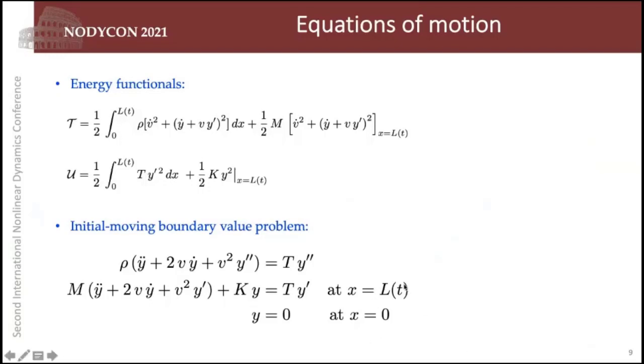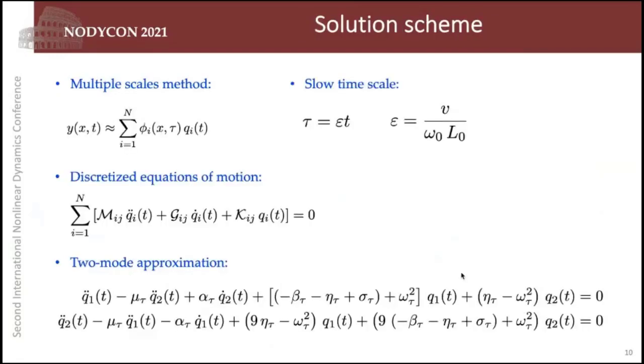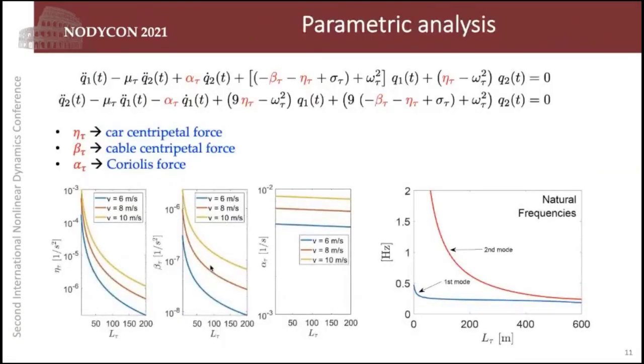I bring your attention that the length here is time dependent. So the boundary of this problem moves, changes with time. To solve this, we employ the multiple scale method, where we introduce a small, a slow time scale, defined in this way here with this small parameter. And with this approach, we're able to discretize the equation of motion arriving in an expression for the equation of motion with a mass operator, a gyroscopic operator, and a stiffness operator. For the first analysis, we are not considering the damping. And we construct a two-mode approximation taking n equal to two. We are going to investigate the effect of some parameters in this two-mode approximation.